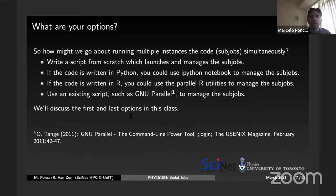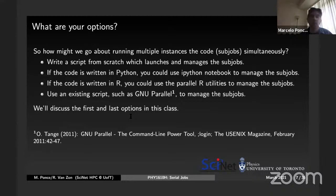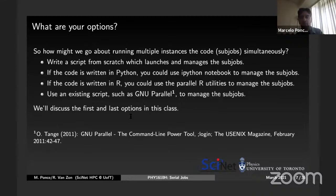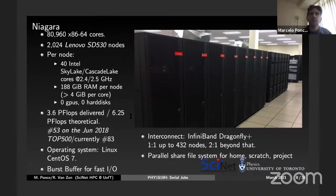So which options do we have for running serial jobs? We could write a script from scratch that launches and manages the sub-jobs — that's a lot of work but some people have done it. If the code is written in Python, you could use ipython notebook to manage the jobs. If the code is written in C/Fortran, you could use parallel utilities or libraries. And there is a great tool called GNU parallel — it's written in Perl, a very simple installation, and you can run it almost anywhere to manage sub-jobs. We're going to see this one at the end.